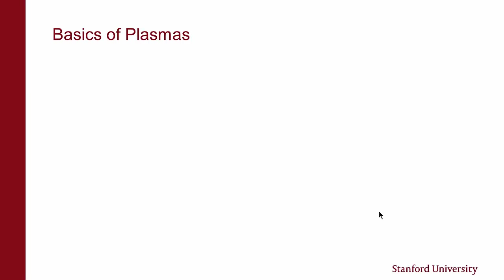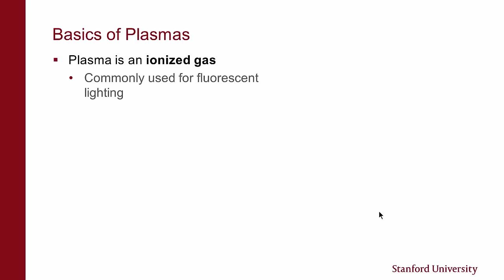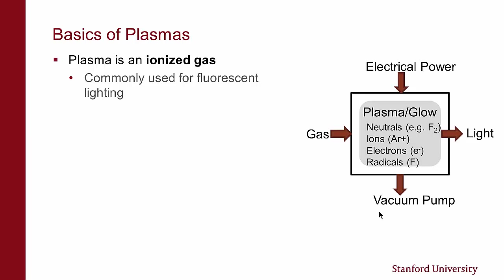Let's start with the basics of plasmas. Plasma is an ionized gas, and plasmas are commonly used for fluorescent lighting. Over here in the diagram, I show basically a vacuum chamber. We have electrical power — we're going to be limiting our discussion to RF power, since DC can cause plasma damage to wafers or device wafers. So we're going to be only talking about RF.